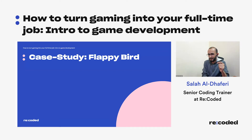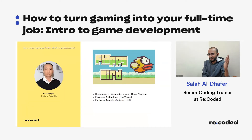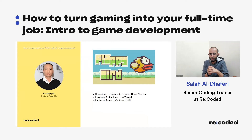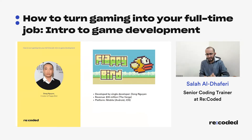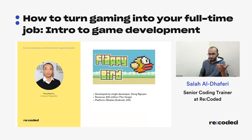Now we jump into the case study of Flappy Bird. This mobile game took the world by storm. It's a single-tap game — you tap the screen to make the bird fly. It was created by Dong Nguyen, a solo developer who allegedly created the game in only three days. The revenue from this game is $80 million according to The Verge, and Dong himself claimed he made $50,000 every single day from ad revenue. It targeted both Android and iOS platforms.